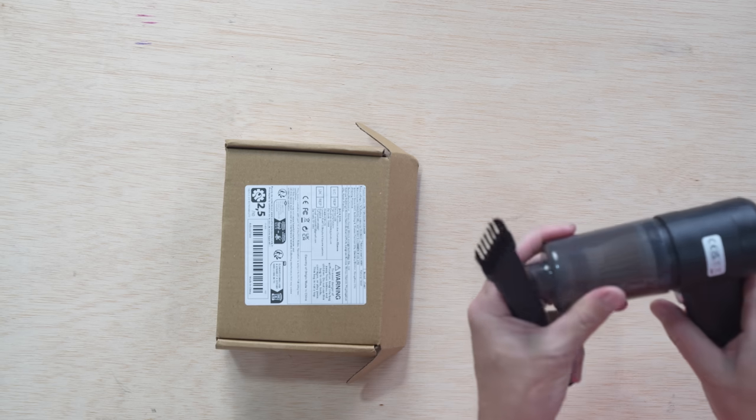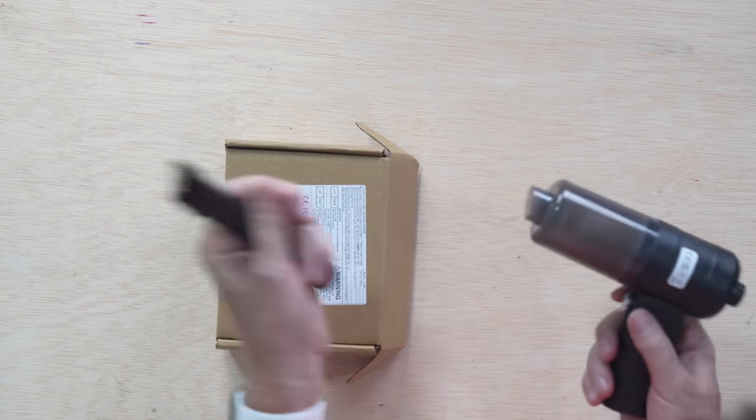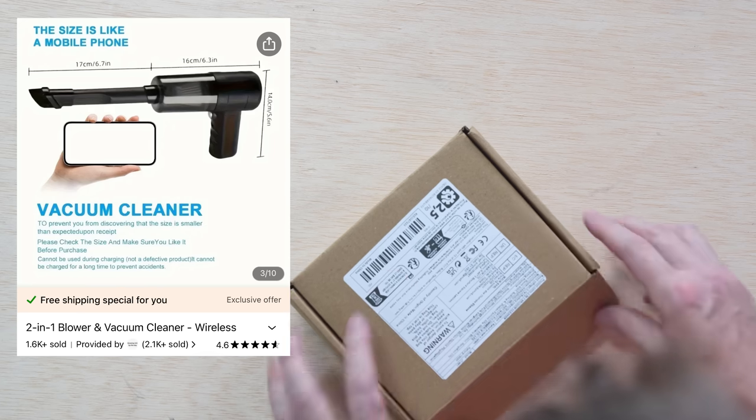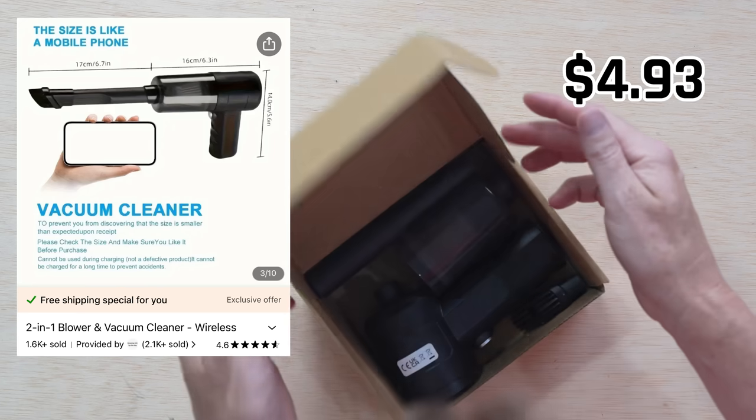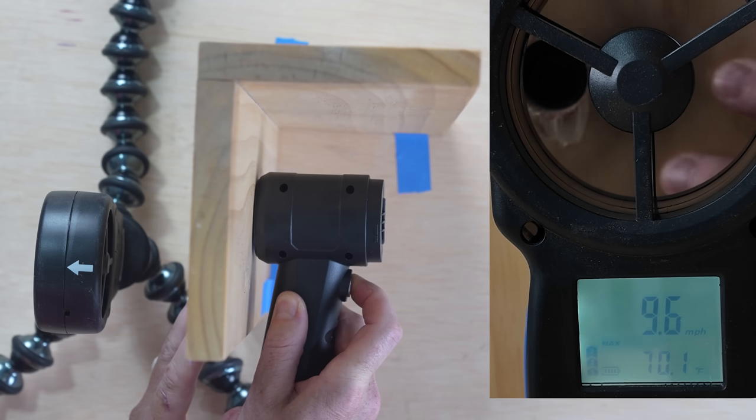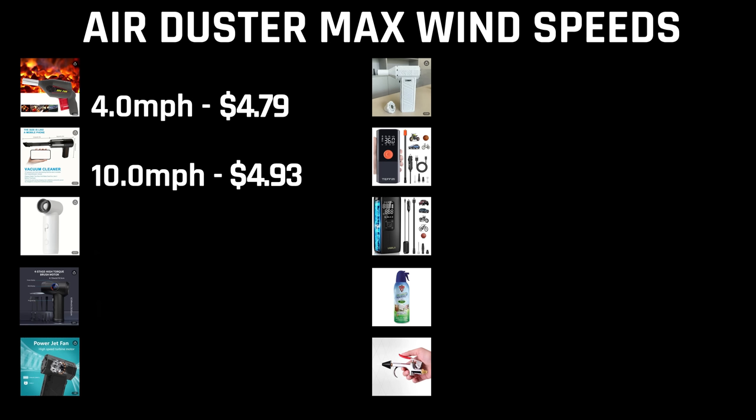Next up is our two-in-one blower fan here. This one has a vacuum on one side and then you can attach this to the back to make it a blower. And this one is only four dollars and ninety three cents. Okay significantly better than the barbecue fan. So ten point zero miles per hour. Not bad.